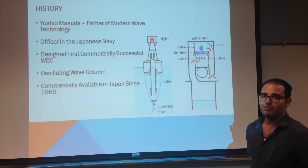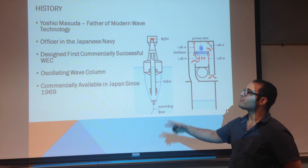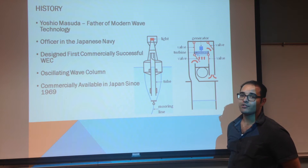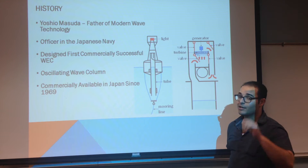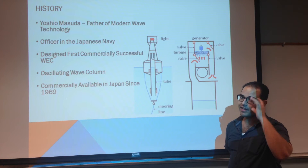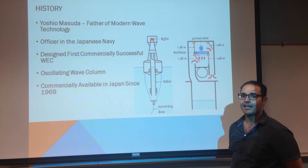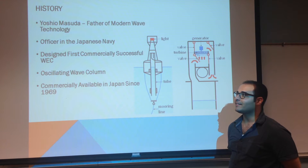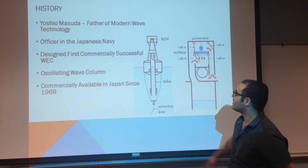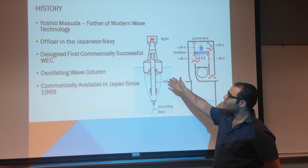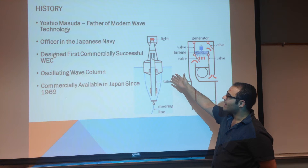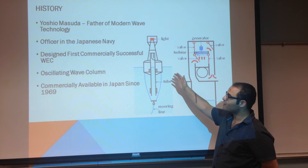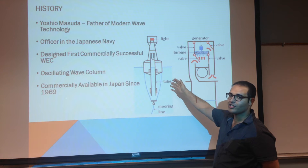Moving forward a couple of centuries, we have developments from Yoshio Masuda, who is considered the father of modern wave technology. He was an officer in the Japanese Navy and his work commenced in the 1940s to develop this buoy, which is of the oscillating water column configuration and is the first commercially successful wave energy converter.